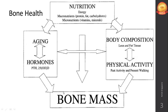Bone mass usually means how mineralized your bone is — the bone density. 90% of adult bone mass is in place by the end of adolescence, by the age of 19 to 20. What you have to do next is to maintain this mineralization — not go into a stage of calcium deficiency, phosphorus deficiency, or vitamin D deficiency, which could lead to deteriorating bone mass.